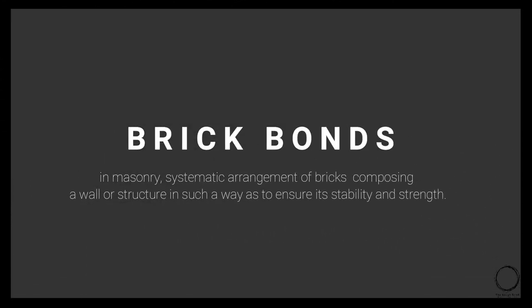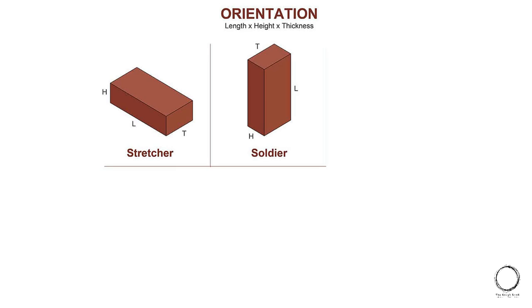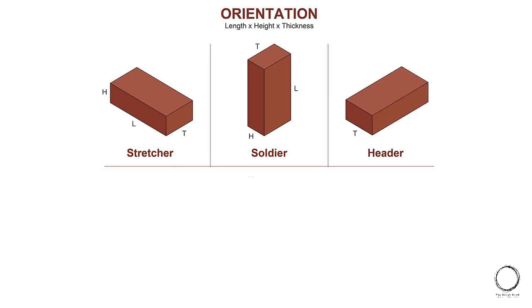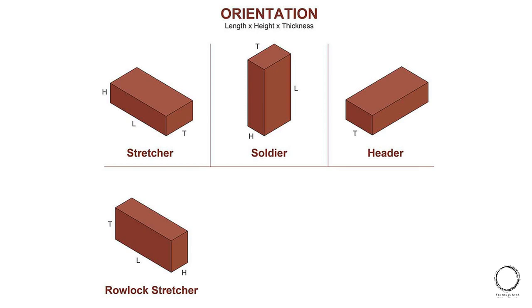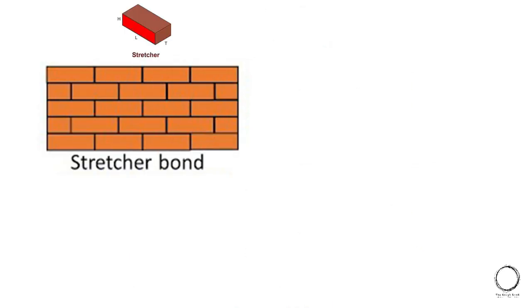With the typical brick size, different kinds of bonds can be created. Brick bonds means the systematic arrangement of bricks composing a wall or structure to ensure stability and strength. A brick has different orientations according to its length, breadth, and height, and hence they are named differently: stretcher for the length, soldier for the height, header for its thickness, and so on.